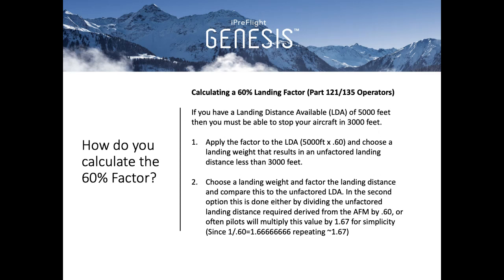So how do you calculate the 60% factor that both regulations require? Let's say you have a landing distance available, LDA, of 5,000 feet. In this case you must be able to stop your aircraft in 3,000 feet. Now there are two ways to apply this rule. The first is to apply the landing factor to the LDA: 5,000 feet times 0.6, and choose a landing weight that results in an unfactored landing distance less than 3,000 feet. The second option is to choose a landing weight and factor the landing distance and compare this to the unfactored LDA. In the second option, this is done either by dividing the unfactored landing distance required derived by the AFM by 0.6, or often pilots will multiply this value by 1.67 for simplicity, since 1 divided by 0.6 equals 1.6 repeating, which rounds to 1.67.